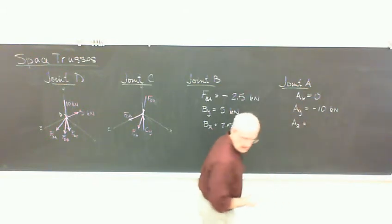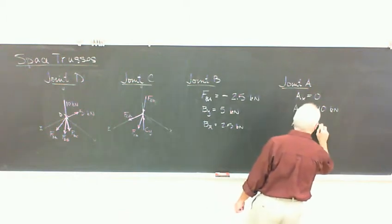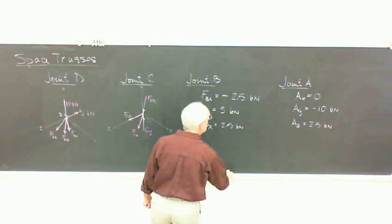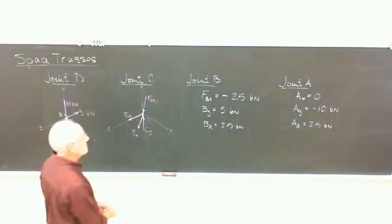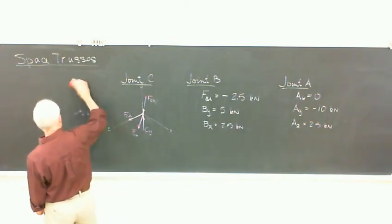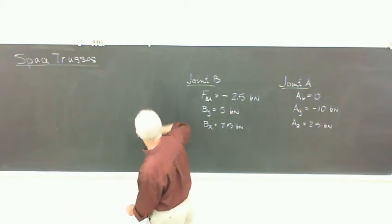And then AZ, and we're all done, is 2.5 kilonewtons. So we lighten up the support a little bit. We don't need support at AX. We don't need any of the back triangle that went to E. Some of the other pieces were in tension only.